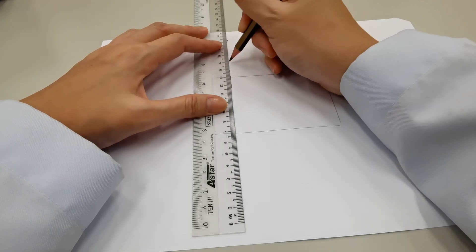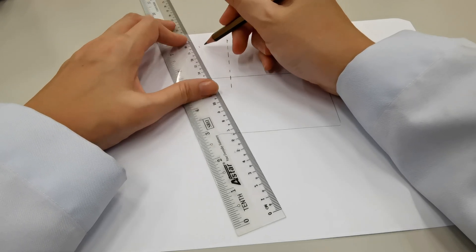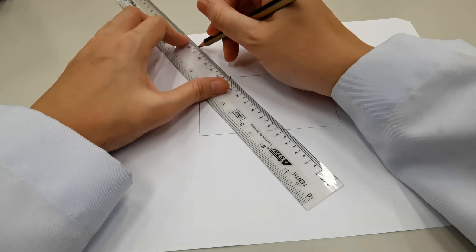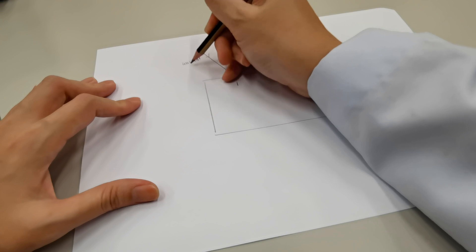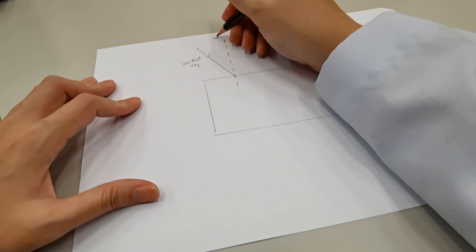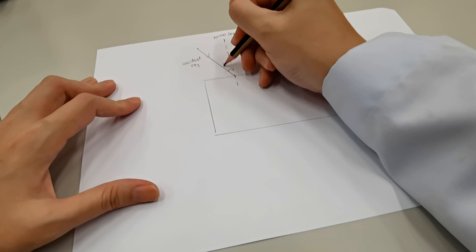This is the normal line. And this will be the incident ray. The incident angle is here at 30 degrees.